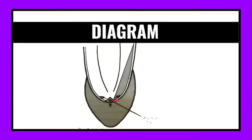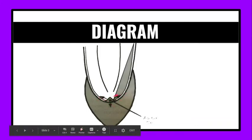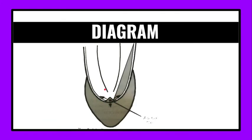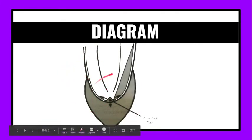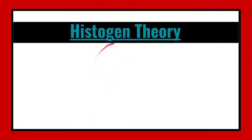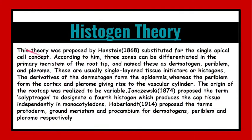Now we can see the diagram relating to this apical cell theory. There is a single apical cell in the center which has three cutting faces, and this tetrahedral apical cell gives rise to the whole body of the root.